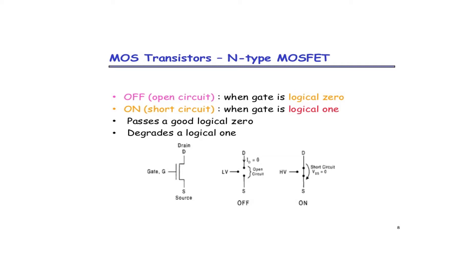First one: NMOS MOSFET. NMOS means it has the majority carriers as negative type — electrons are the majority charge carriers in the N-type MOSFET. There are three terminals in the MOSFET: gate, drain, and source. In PMOS and NMOS, the difference is: if we are having a bubble in the gate symbol it is a PMOS; if the bubble is absent it is the N-type MOSFET.